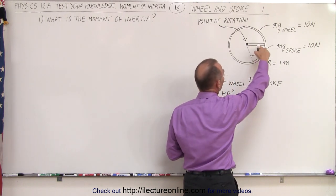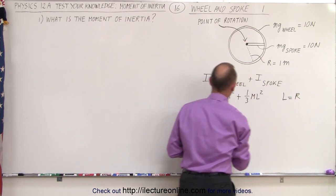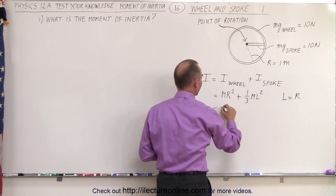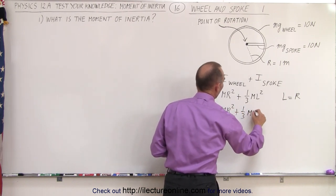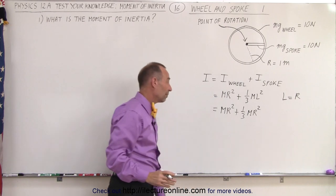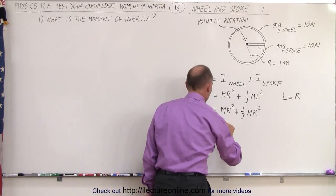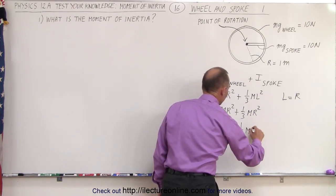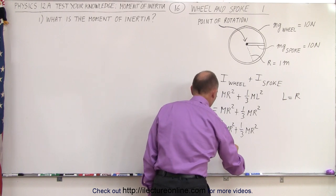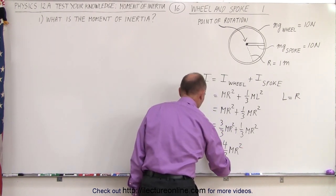In this case, the length of the bar is equal to the radius of the wheel. So l equals r, which means that the moment of inertia is mr squared plus one-third mr squared. So we have three-thirds mr squared plus one-third mr squared, which means that this is four-thirds mr squared.